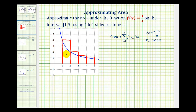The idea is that the sum of the areas of these four rectangles will be approximately equal to the area under the blue function. As you can see, it's going to be too much area, so this is often called the upper sum. We'll label these area sub one, area sub two, area sub three, and area sub four.